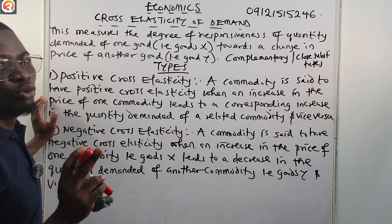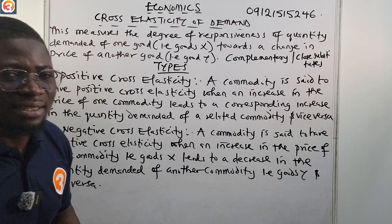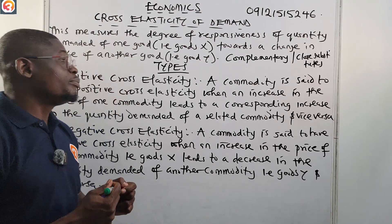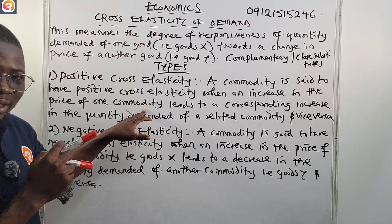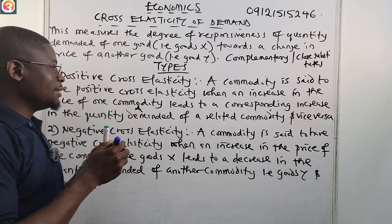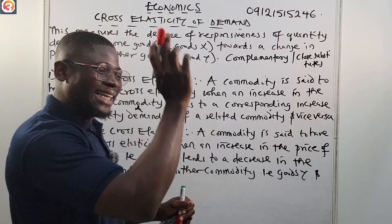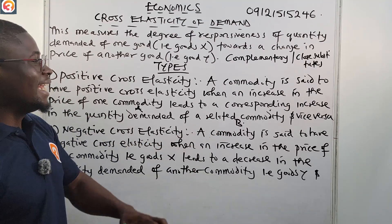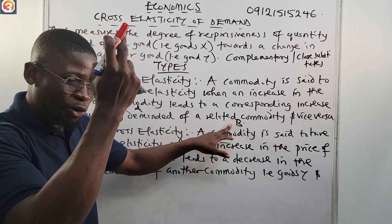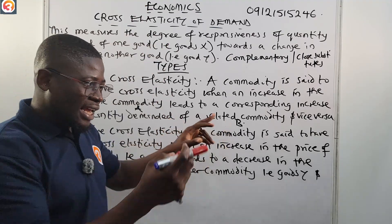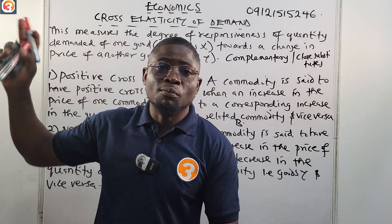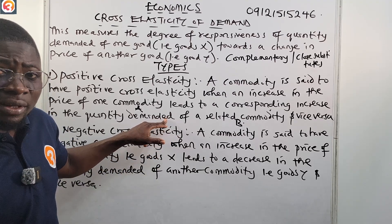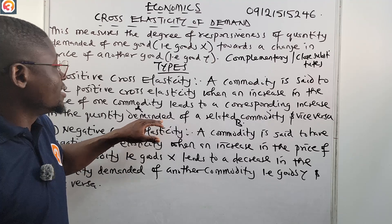Now let's look at the types of cross elasticity of demand. Number one, we have positive cross elasticity. A commodity is said to have positive cross elasticity when an increase in the price of one commodity A leads to a corresponding increase in the quantity demanded of the related commodity B. So if A increases in price, the quantity demanded of B also increases. This relates to goods that have close substitutes.